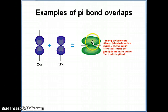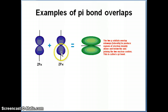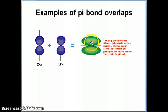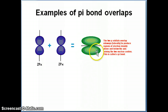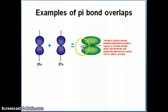The pi bond is not cylindrically symmetric because the p orbital has two phases — the top part has a positive phase and the bottom part has a negative phase. So when you rotate around the bond axis, you don't get a symmetric picture at the bottom because the top orbital has a different phase than the bottom orbital. This is what we refer to as a pi bond.